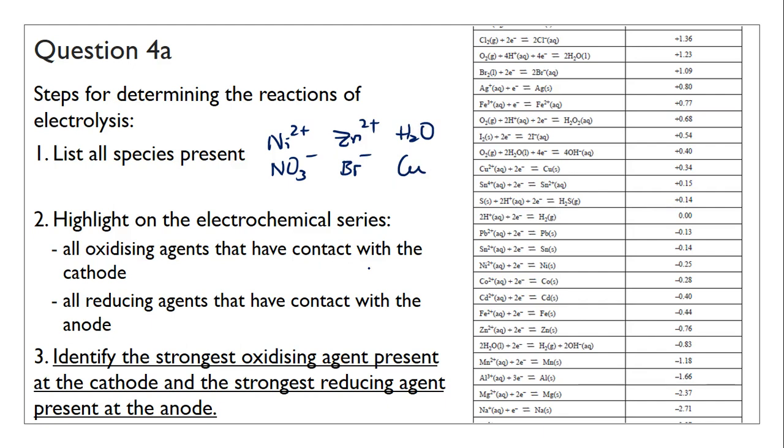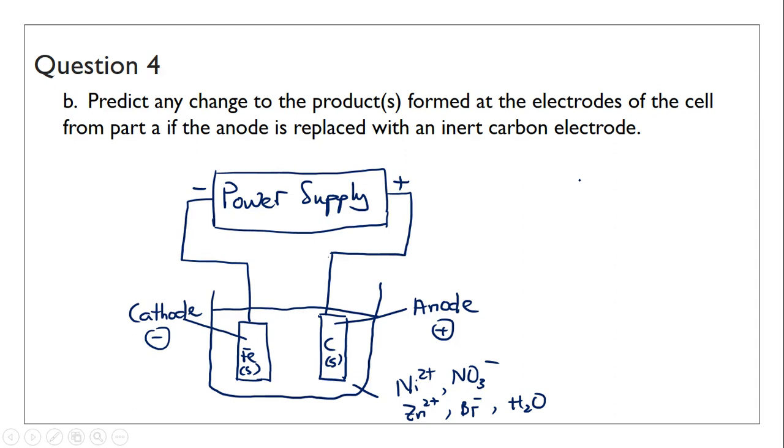Highlight all the oxidizing agents that have contact with the cathode. That hasn't changed. You still have nickel ion, zinc ions, and water. Because these three are still in the electrolytes, they should still have access to the cathode. The one thing that may change though is the species that actually have access to the anode. Bromide ion is there, water is there. But it's actually going to be wrong to highlight copper in this case because of where it is.